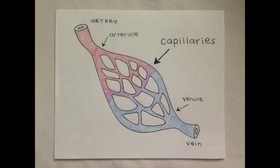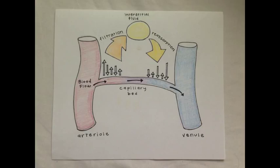First we start with an arteriole, which is a small branch of an artery leading to the capillaries that collects blood from the heart and sends it back to the capillaries. Then we have venules, which are small veins that collect blood from the capillaries and send the blood back to the heart. Capillary walls contain small pores that allow certain substances to pass into and out of the blood vessel. Fluid exchange is controlled by blood pressure within the capillary vessel.